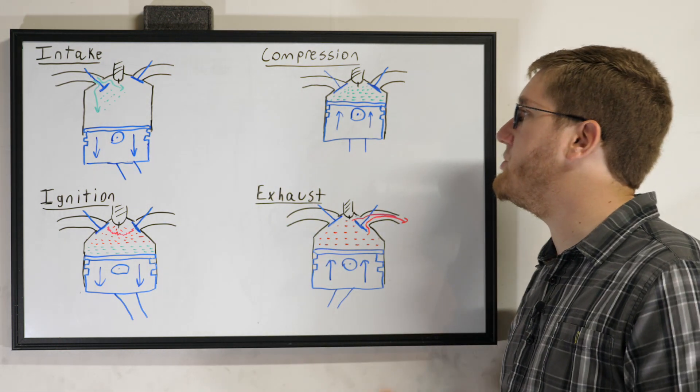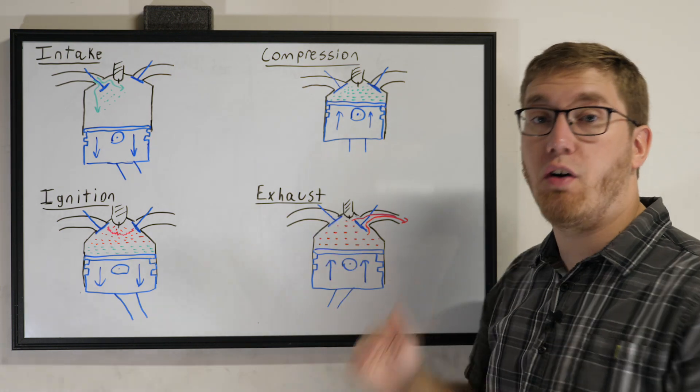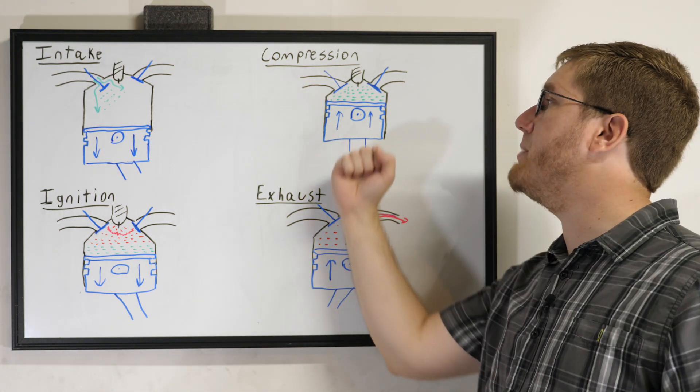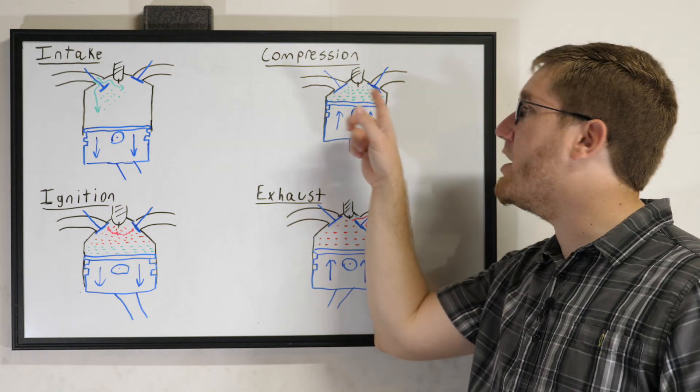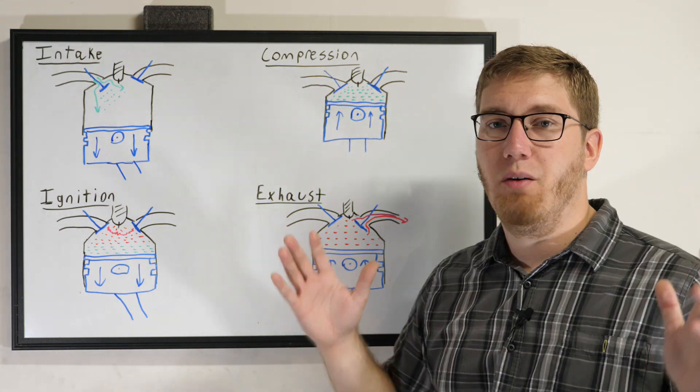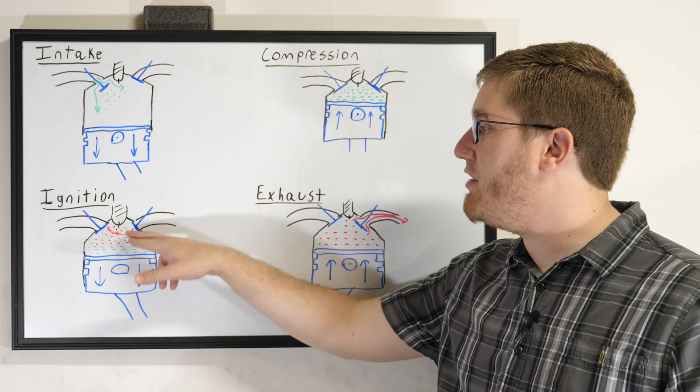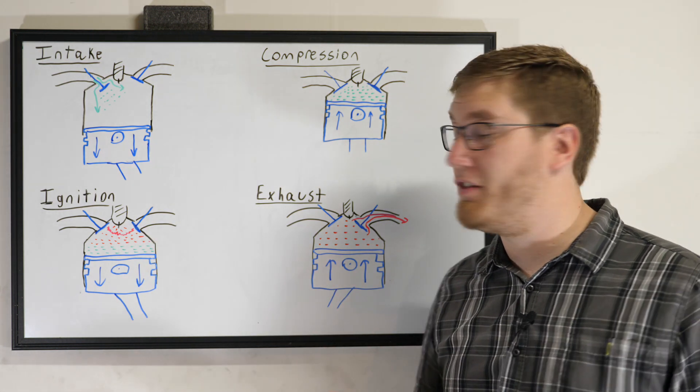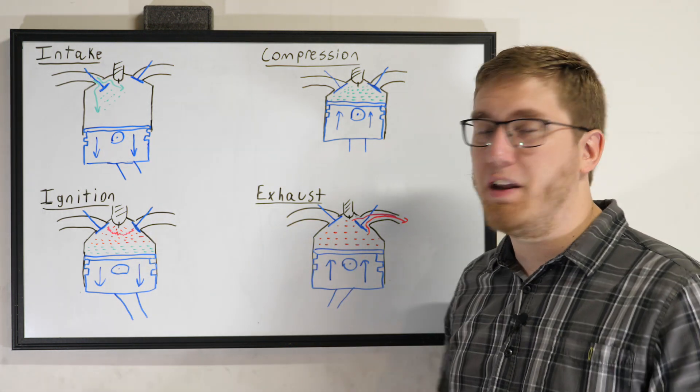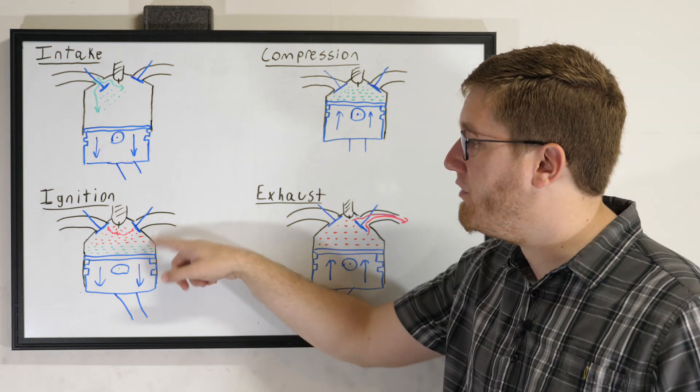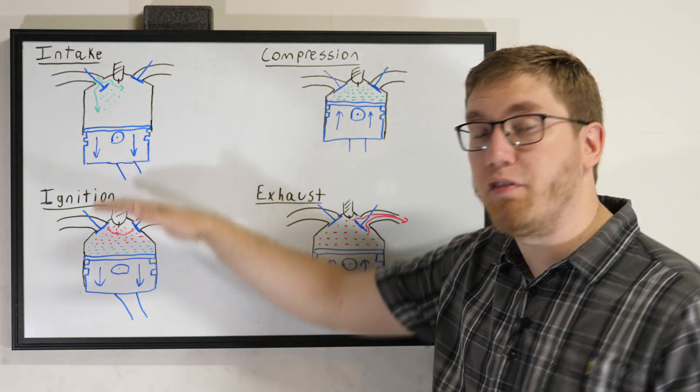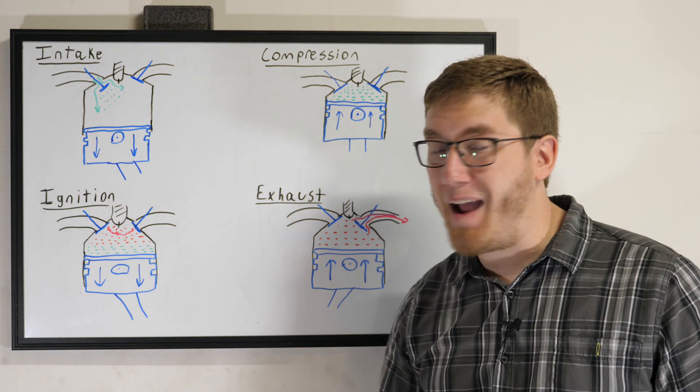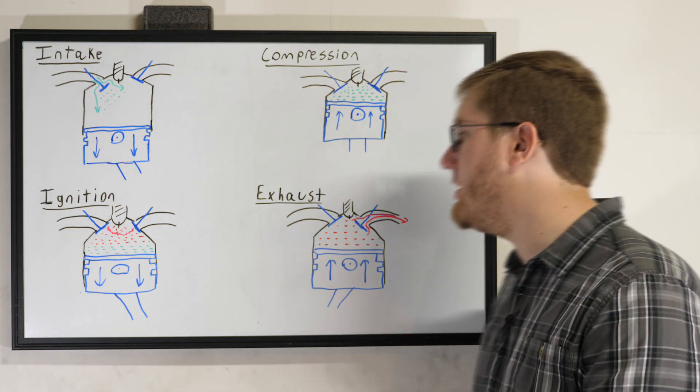We then move to the compression stroke where the intake valve has now closed, creating a seal. The piston is being forced back up, and this is compressing all of that air and fuel that you just drew in. We then have the ignition phase where our spark plug in the top of the cylinder fires off. This begins to burn the air and fuel mixture in a very precisely designed wave front that should be very smoothly pushing the piston back down through the cylinder, creating the power within the engine.